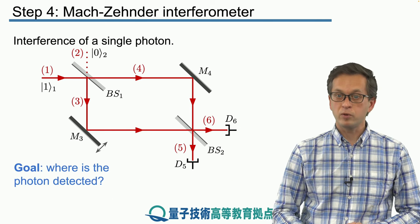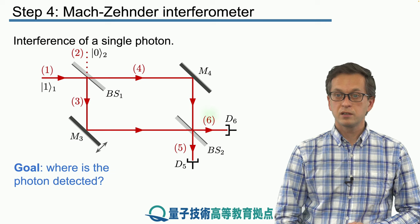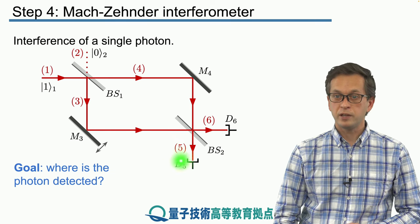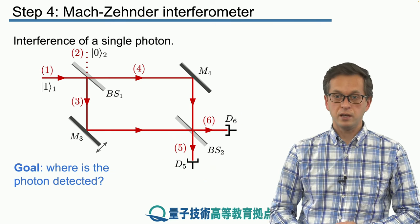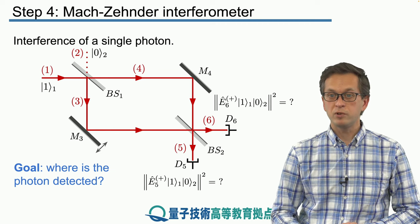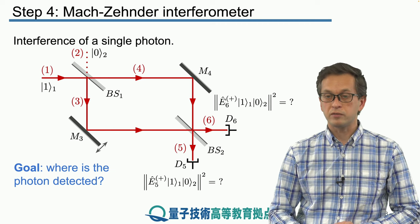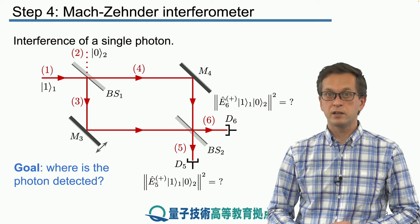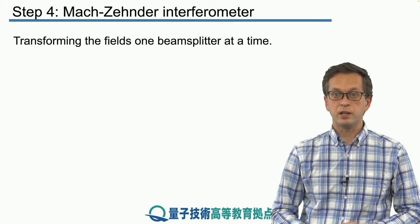So we want to compute the probabilities of the photon being detected at D5 or at D6. In other words, we want to compute the W1 for detector 5 and W1 for detector 6. So let's do that.